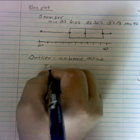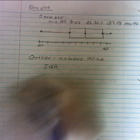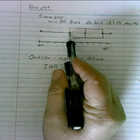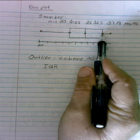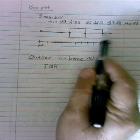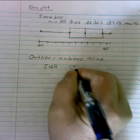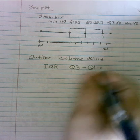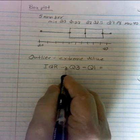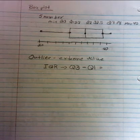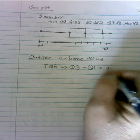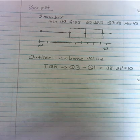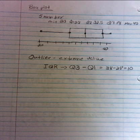In order to calculate an outlier, we have to know the IQR. Now the IQR is called the interquartile range. So that is the value from here to here, from quartile 1 to quartile 3. So we take quartile 3 and subtract the value from quartile 1 in order to find the IQR. So in our case, that would be 38 minus 28. And so the IQR is 10 for this particular problem.